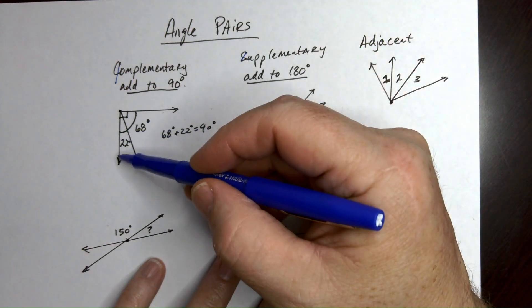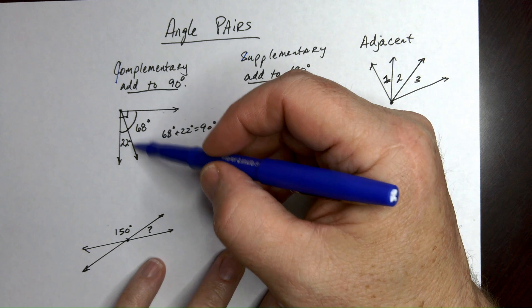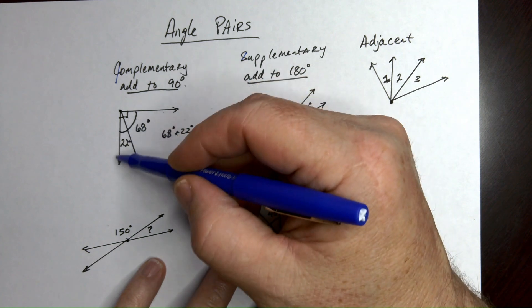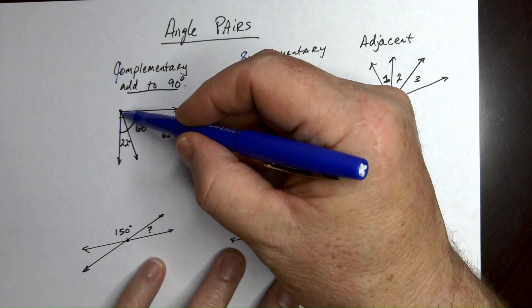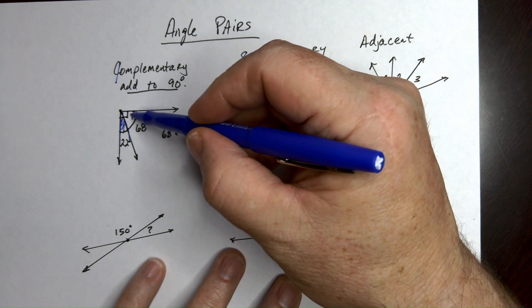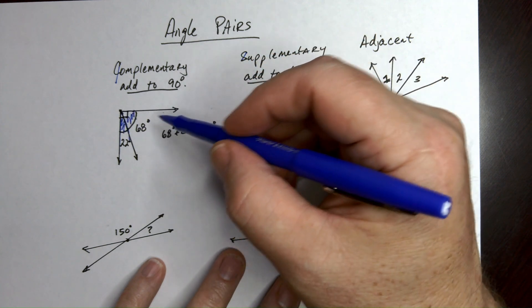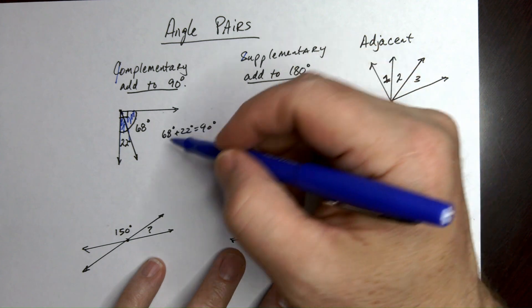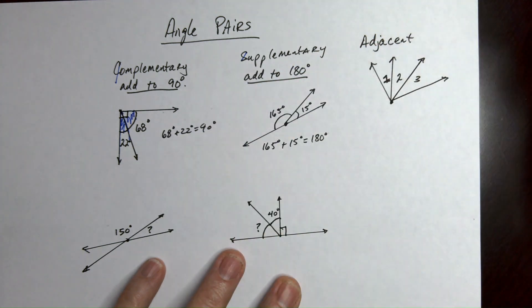So for example, I've got this angle right here and there's actually one, two, there's one angle right here that's 22, right? You see that? We have one angle that's right here that's 68 and then we've got the whole thing. These two are complementary. They add up to 90. 68 plus 22, 90.